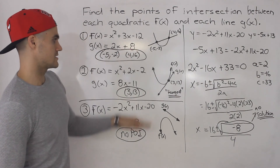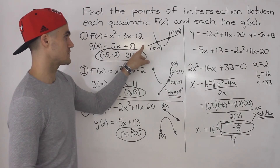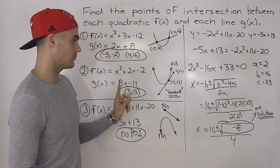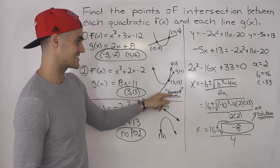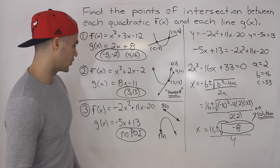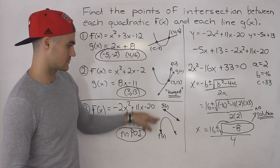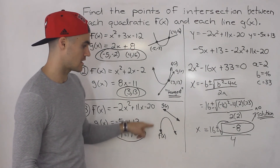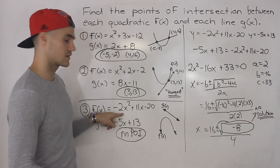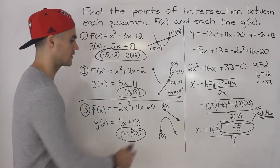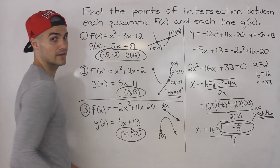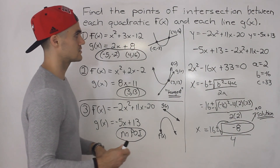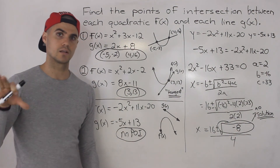So these are the three cases you can run into when dealing with the intersection between a line and a quadratic: two points of intersection, one point of intersection when the line is tangent to the quadratic, or no points of intersection — which happens when the discriminant is negative. The parabola could open up or down and still have no intersection with a given line.